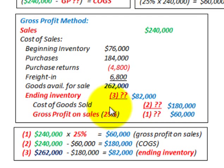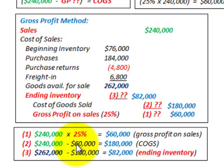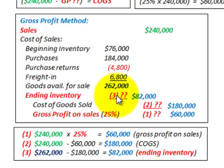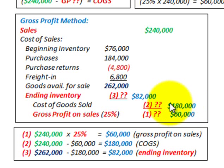To determine our cost of goods sold, that's just the difference between our sales and our gross profit on sales. So $240,000 less $60,000 gives us $180,000 for cost of goods sold. Our ending inventory would be merchandise available at $262,000 less cost of goods sold of $180,000, giving us $82,000 for ending inventory.